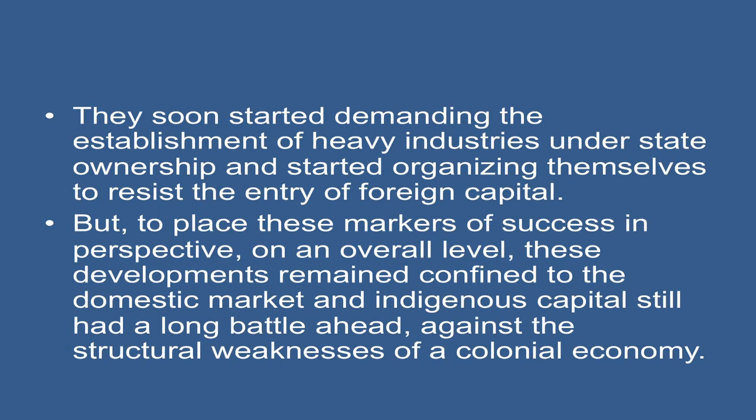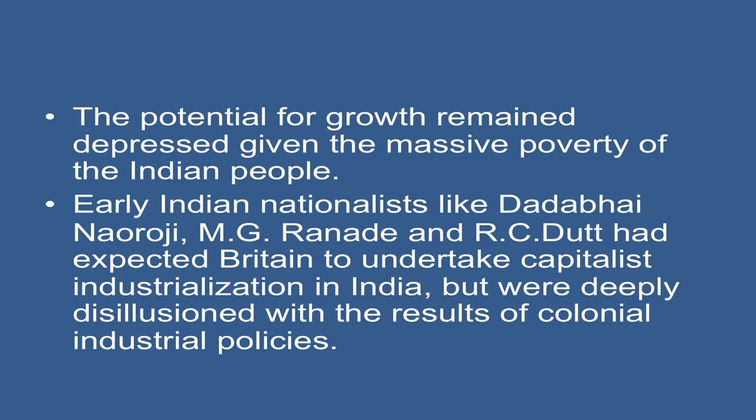After the First World War, links with the foreign market were re-established, but again in the depression years from 1929 to 1933, the domestic market became relatively free to be exploited by indigenous industry as foreign trade declined. The colonial government also provided some protection to the sugar and cotton industries in the face of falling prices in the agricultural sector. Low prices forced capital from land into the manufacturing sector. Indians also ventured into the fields of insurance and banking. Again during the Second World War, as foreign economic influence declined, Indian entrepreneurs managed to make huge profits. Strengthened by its limited success, the Indian capitalist class strengthened their links with the nationalist movement, soon demanding the establishment of heavy industries under state ownership and organizing themselves to resist the entry of foreign capital.